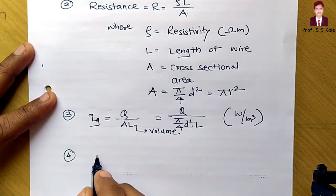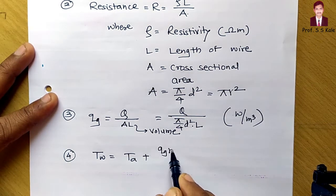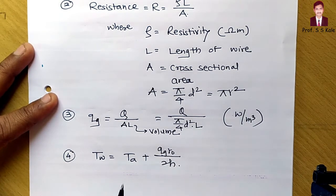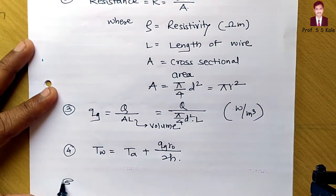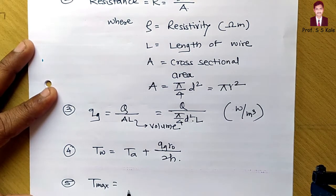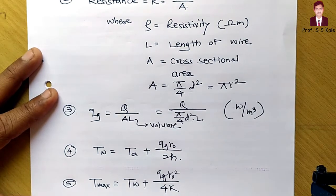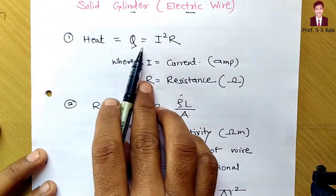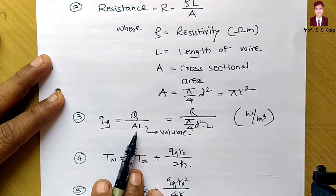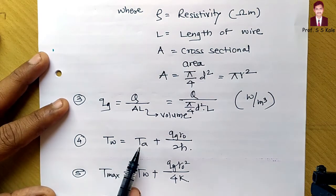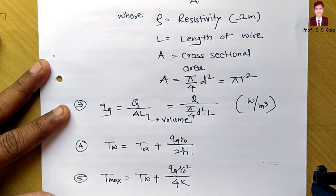The fourth formula is wall temperature: T_w equals T_a plus qg times R_o divided by 2h, where T_a is atmospheric temperature, qg is heat generation, R_o is radius, and h is the heat transfer coefficient. The fifth formula is maximum temperature: T_max equals T_w plus qg times R_o-squared divided by 4k.